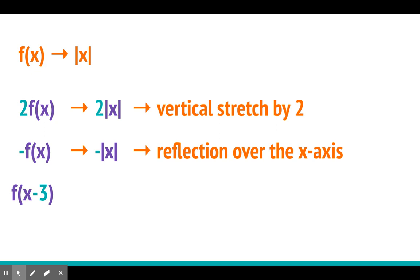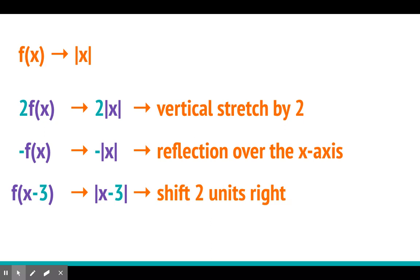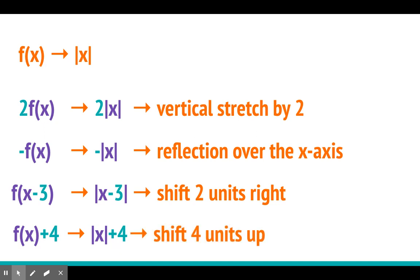f(x minus 3) on the inside — we can replace it where x minus 3 is on the inside of the absolute value sign. And because inside is opposite, it's a shift 2 units right. Lastly, we can have f(x) plus 4 — our function happens to be absolute value of x and we add 4. So this is on the outside, so it's a shift 4 units up.